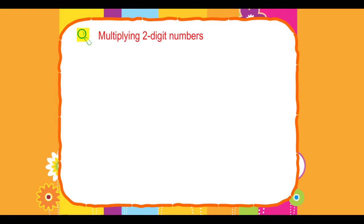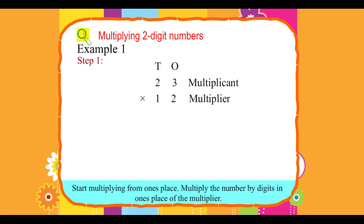Multiplying Two-Digit Numbers. Example 1: Multiply 23 by 12. Step 1: 23 is the multiplicand and 12 is the multiplier. Start multiplying from ones place. Multiply the number by digits in ones place of the multiplier.